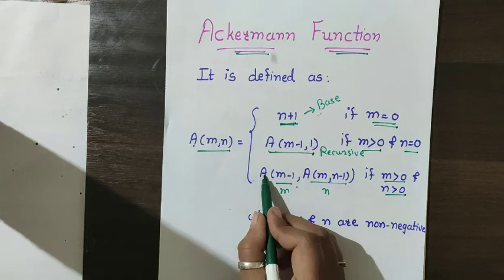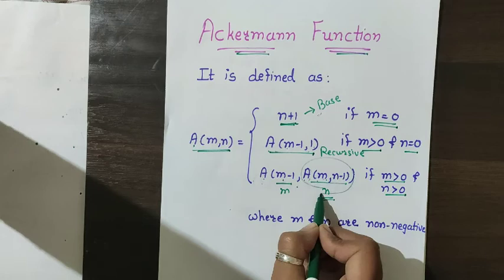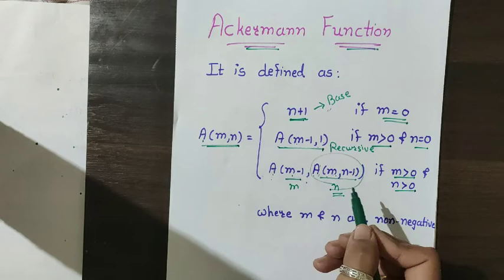The third case involves double recursion, because for a(m,n) I need a(m minus 1, a(m, n minus 1)) — I need to call the function for the value of n as well. So it is a double recursion.